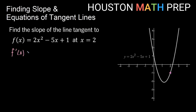Looking at f'(x), the power rule says the 2 multiplies out front — I already have a 2 here, so that becomes 4, and the power goes down by 1, giving us 4x. Moving to the next term, x to the 1: pull the 1 out and multiply, still negative 5, and the power going down by 1 leaves no x. The derivative of the constant is 0, so our f'(x) is 4x - 5.